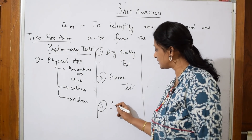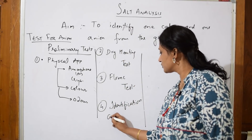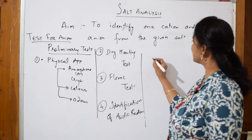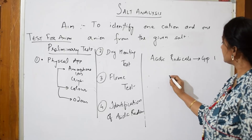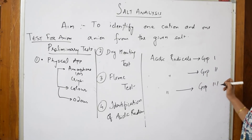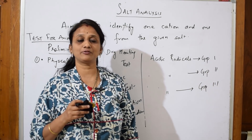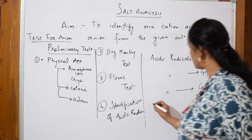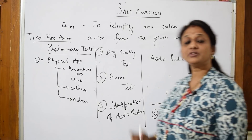After the flame test, you move to identification and confirmation of acidic radicals. There are three categories of acidic radicals: Group 1, Group 2, and Group 3 acidic radicals. Group 1 includes carbonates, Group 2 includes acetates and fluorides, and Group 3 includes chlorides, sulfates, and phosphates. Whichever anion responds, you jump to the confirmatory test for that anion. Every salt requires identifying and confirming one anion and one cation.